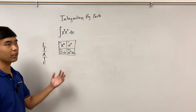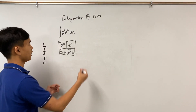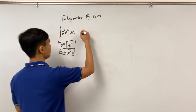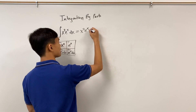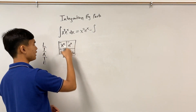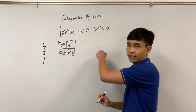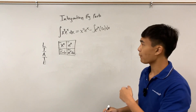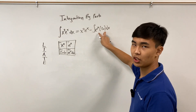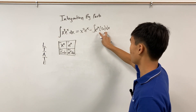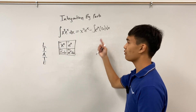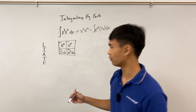Using the integration by parts formula, this integral equals uv minus the integral of v du. Notice we still have two functions being multiplied by each other in that remaining integral, so we have to do integration by parts again.